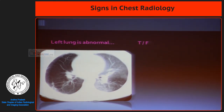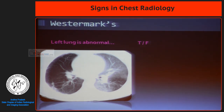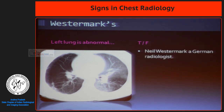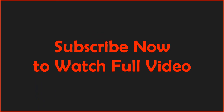On the same patient's CT scan, we can see wedge-shaped translucencies, which are oligemic. This is Westermark's sign. Westermark's sign occurs because of the oligemia.